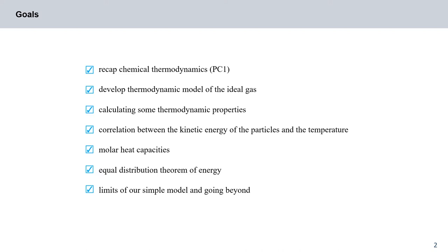Next we will find a correlation between the kinetic energy of the particles and the temperature, and this correlation will then allow us to calculate molar heat capacities. We will then learn about the equal distribution theorem of energy and we will compare this with experimental values, and this will finally show us the limits of the applicability of our simple model, and for the rest of the lecture we will go beyond this simple model.